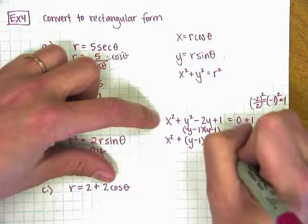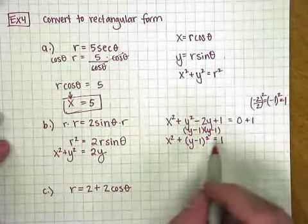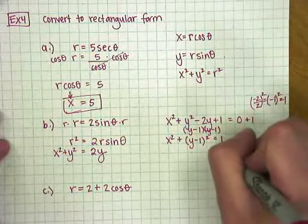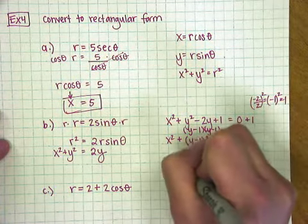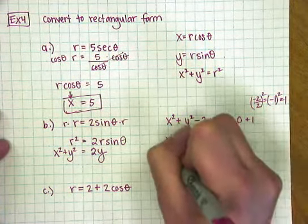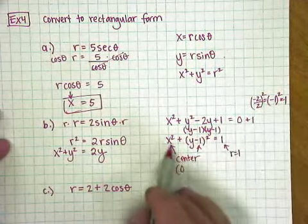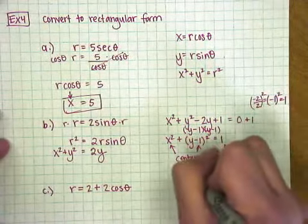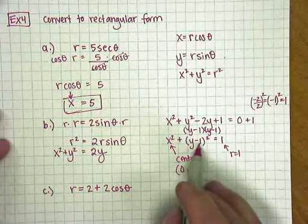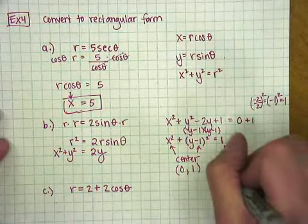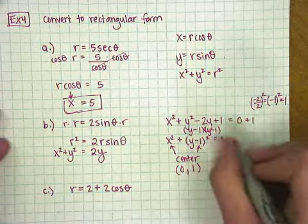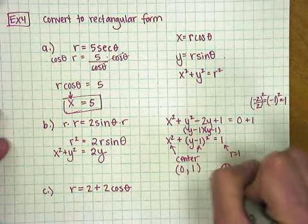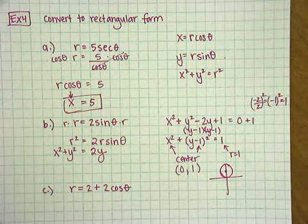And then I have a 1 here. Now, the neat thing about this is this is a circle. The radius of this circle is 1, and the center of this circle is over 0 because there's nothing here, and then up 1 because of the opposite of negative 1. So this would be a circle with center over 0, up 1, and it would have a radius of 1. So it would look like this. The graph would look like that.